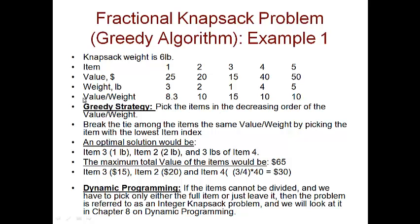Item 3 has the largest value per weight at 15, so we pick item 3 first. It's only 1 pound, so we pick 1 pound of item 3 — leaving 5 pounds remaining. We have a three-way tie at value per weight of 10, so going left to right, we pick item 2 next. We pick all 2 pounds of item 2, leaving 3 more pounds to fill.